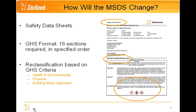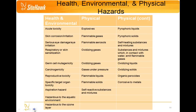Your safety data sheets will also need to be reclassified based upon the new GHS criteria, and those new classifications will need to be communicated on the safety data sheet in section 2. There will be new health, physical, and environmental classifications, and it's going to be very important for you to understand these new GHS classifications so that you can communicate that information to your employees. This slide shows a representation of all of the new GHS health and physical hazards — health and environmental hazards are listed in the first column, and physical hazards are listed in the last two columns.